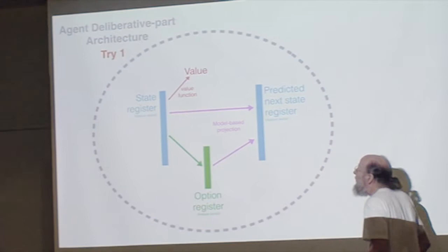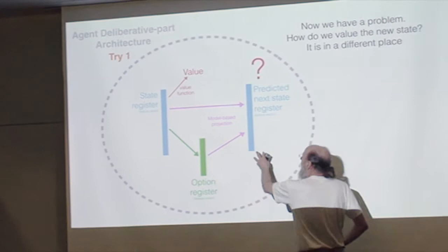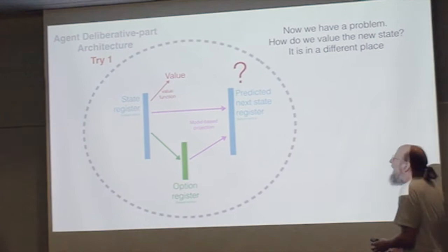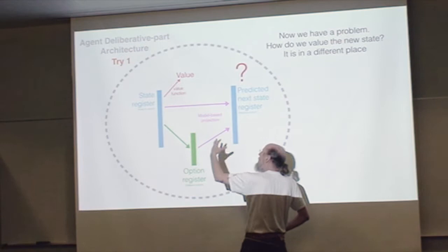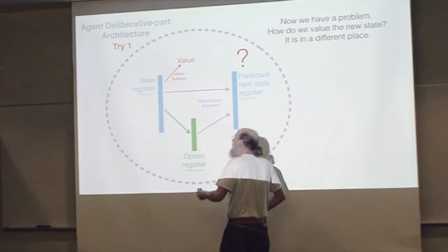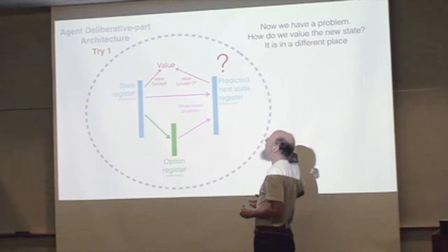Remember our value function because we're going to have a problem. The problem here is how do we value this state? Our value function is valuing the first state. How do we value the new state because it's in a different place? I have some machinery that's looking at that place. It's actually quite difficult to think how you can redirect it to think of this place.